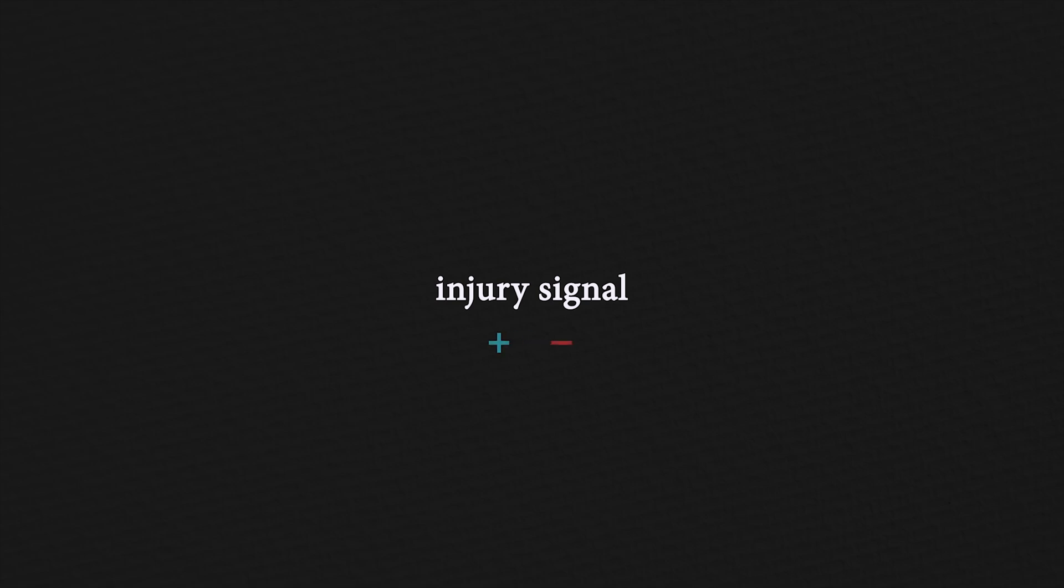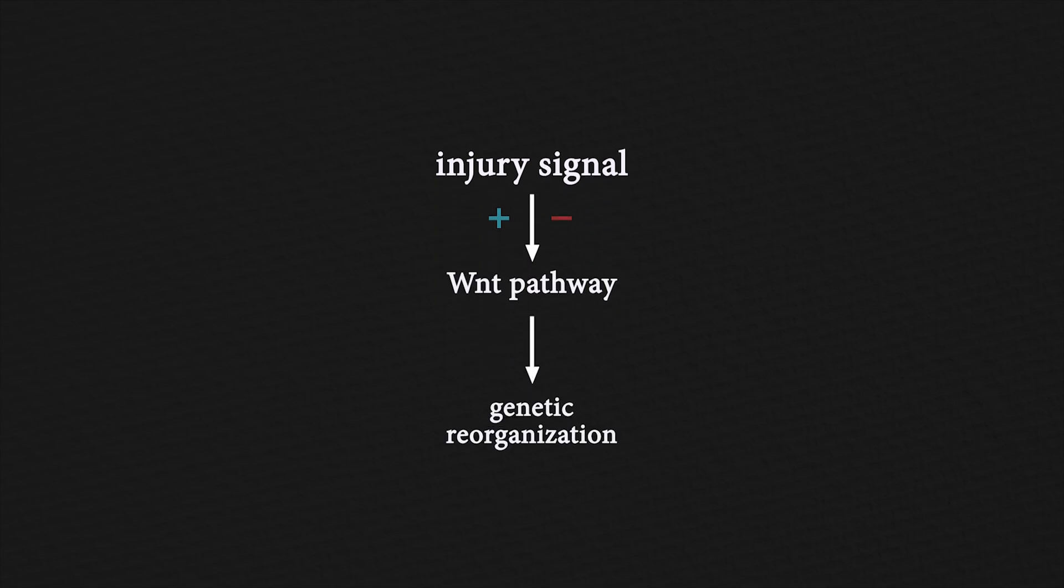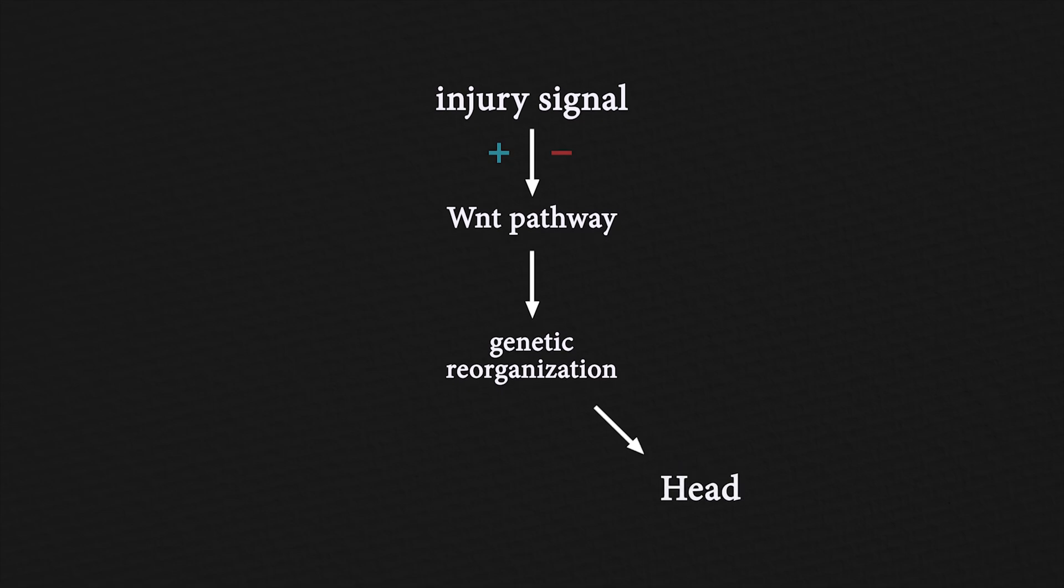The signals received activate or inhibit WIND signaling pathway, which in turn causes changes in the reorganization of genetic material within cells. This reorganization guides whether the cells regenerate a head or a tail.